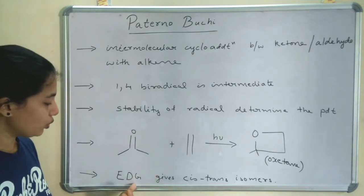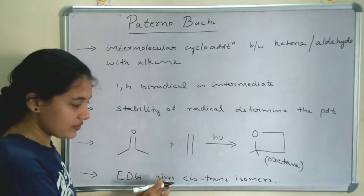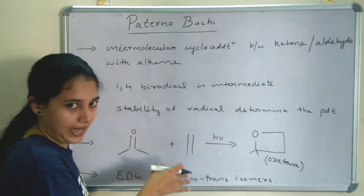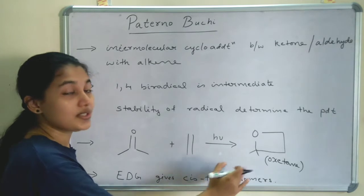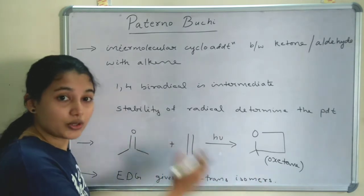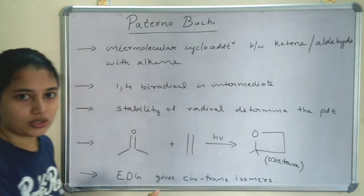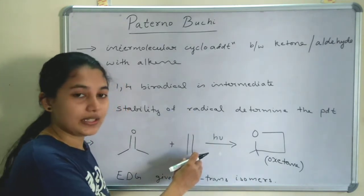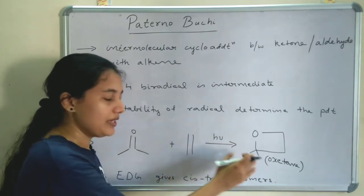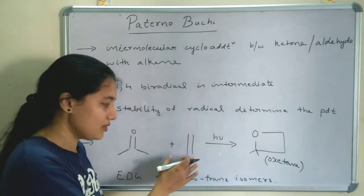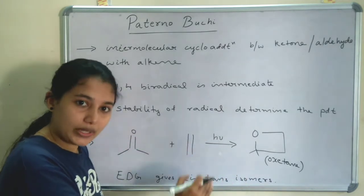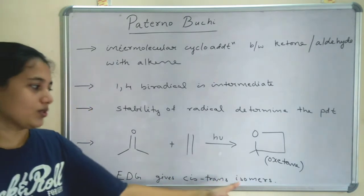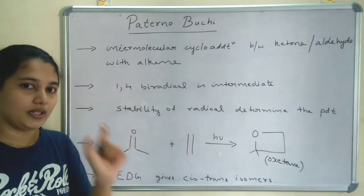Another important point: if an electron donating group is present in the alkene, it gives cis and trans isomers. If an electron withdrawing group is present in the alkene, the product stereochemistry depends upon the reactant stereochemistry — it will give a stereospecific reaction, meaning the product stereochemistry will be the same as the alkene reactant. But if an electron donating group is present, two products will form: cis and trans.